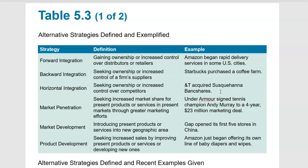Backwards integration is seeking ownership or increasing control of the firm's suppliers. An example would be Starbucks buying a coffee farm. It could also be McDonald's, which has purchased farmland to get control over the quality of their potatoes for their french fries — controlling how they're grown, how big they're going to be, how they're utilized. To get more control over their food supply, McDonald's has actually purchased some of the farms that feed into their products.